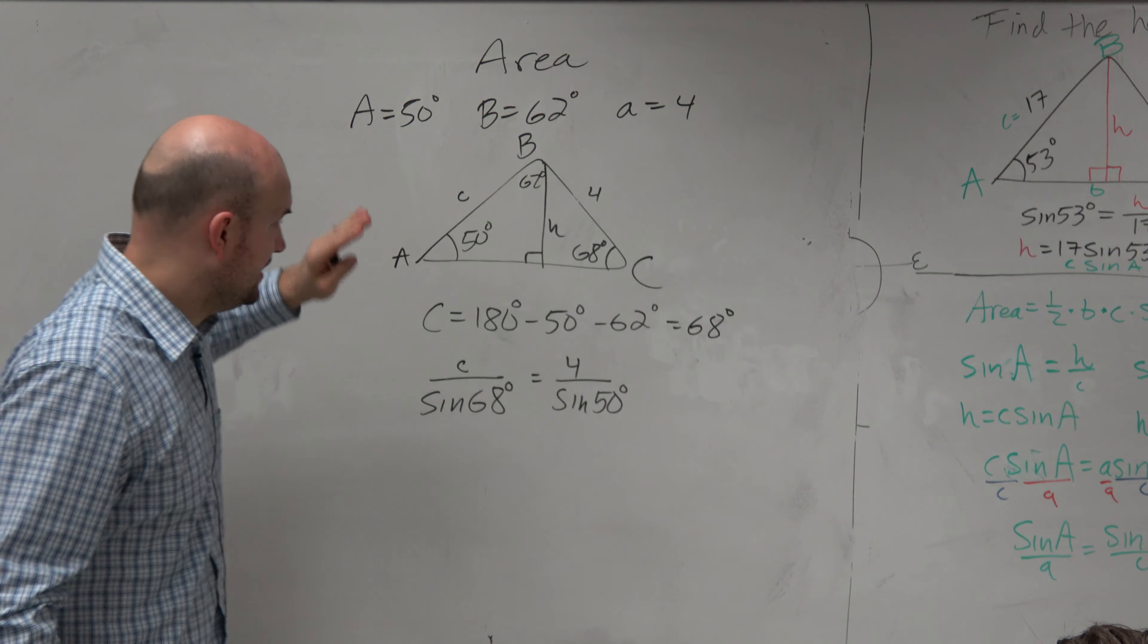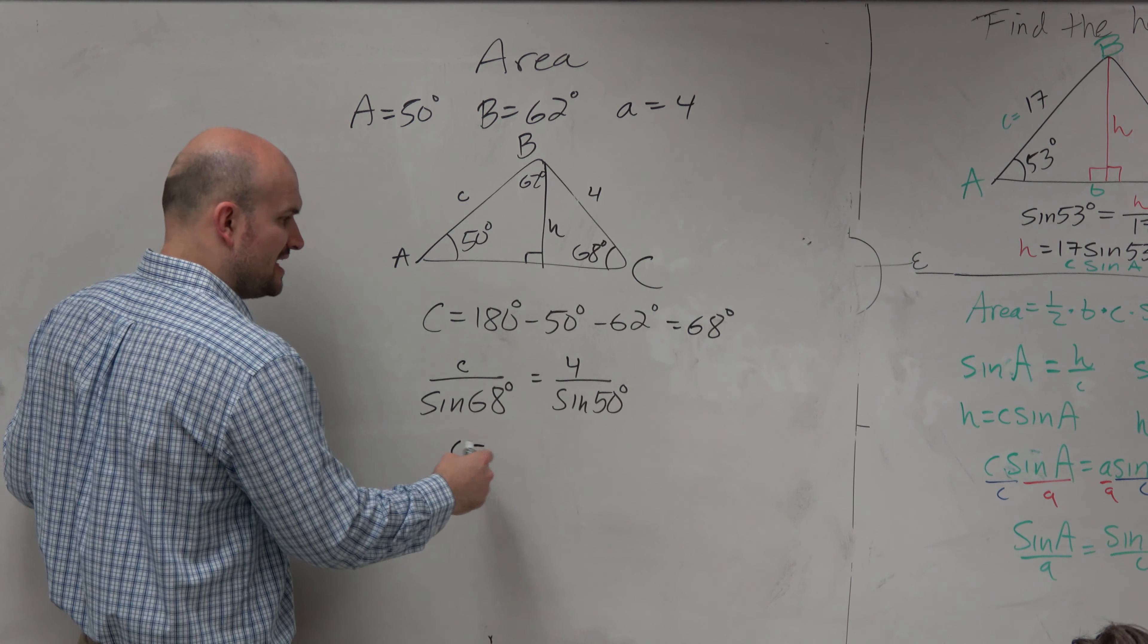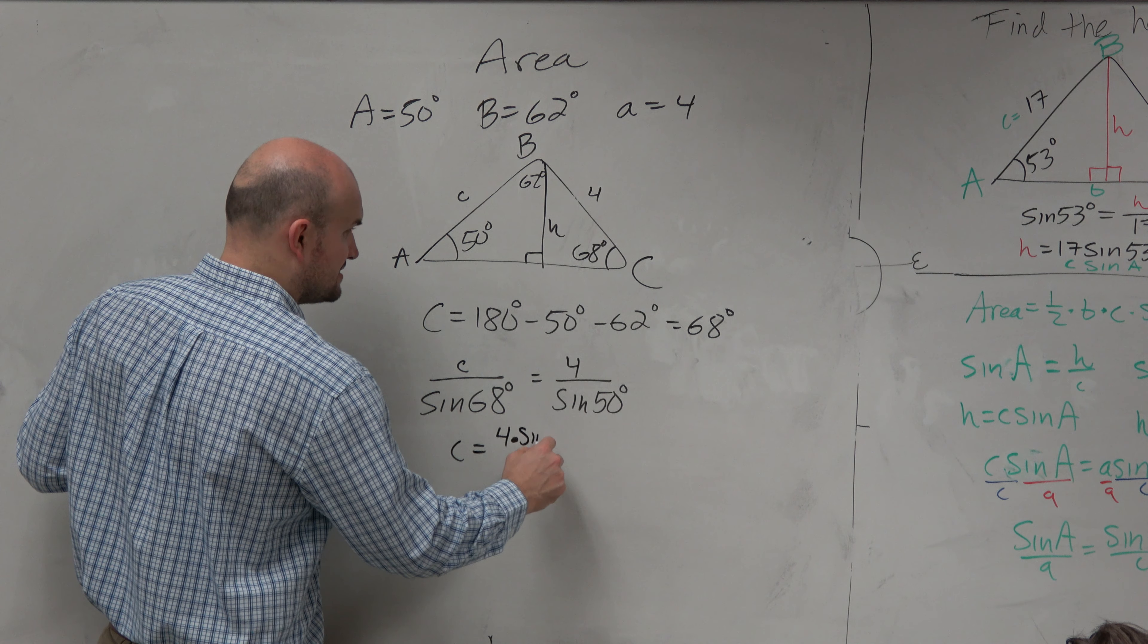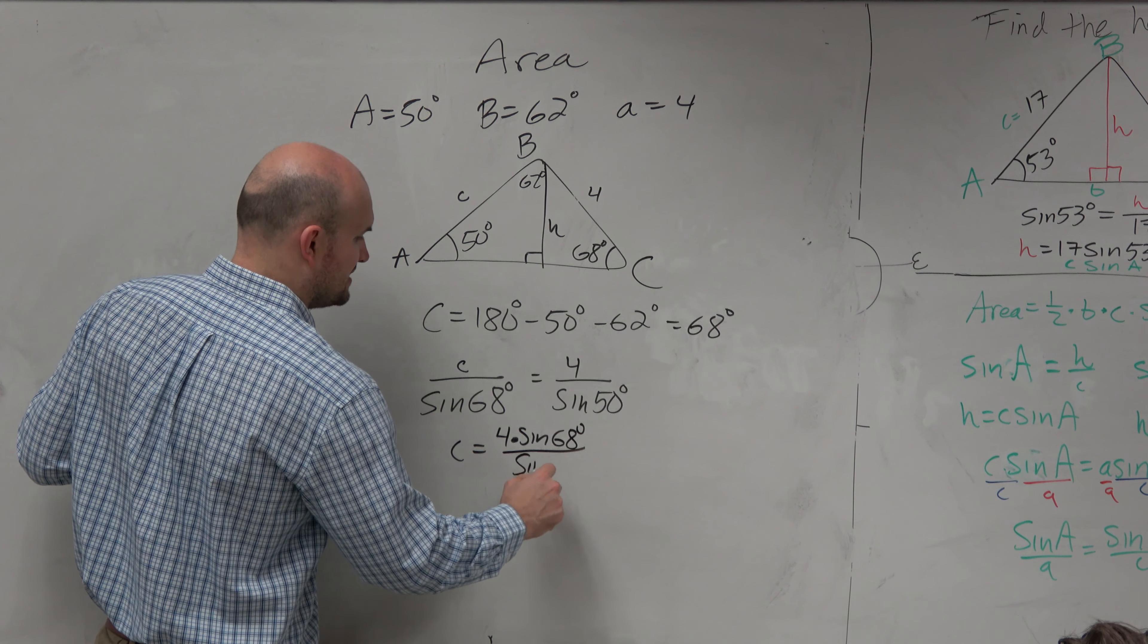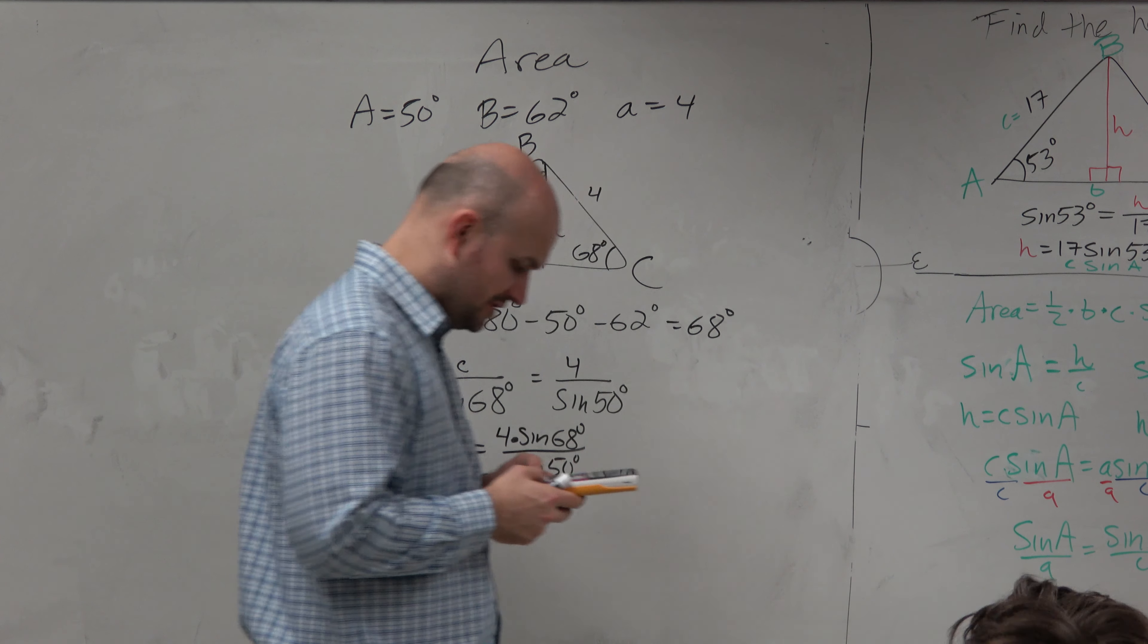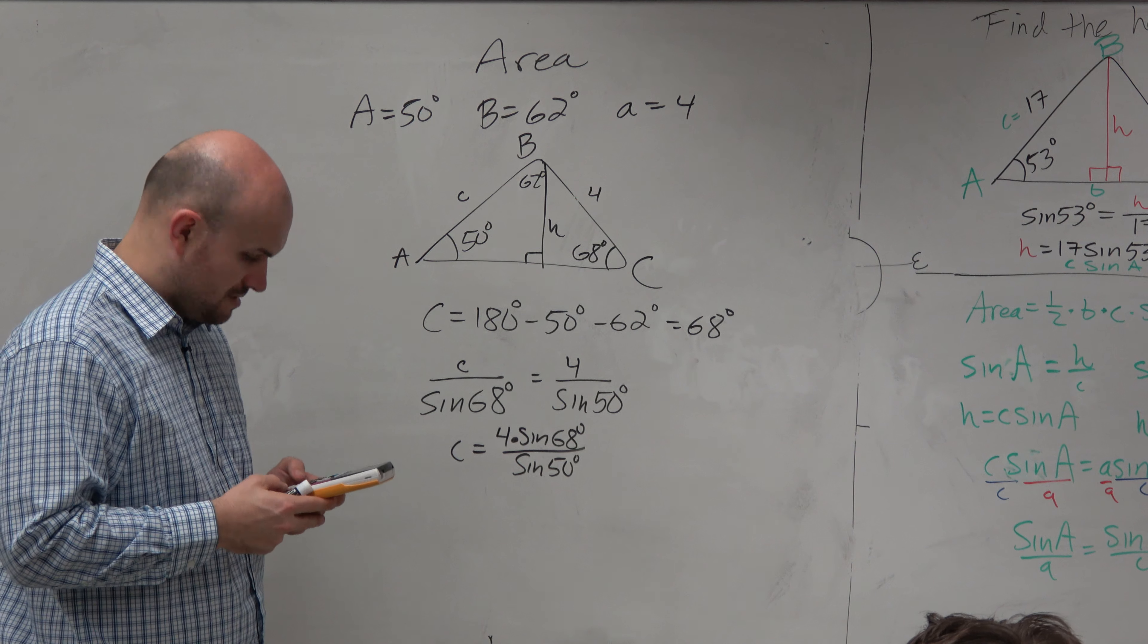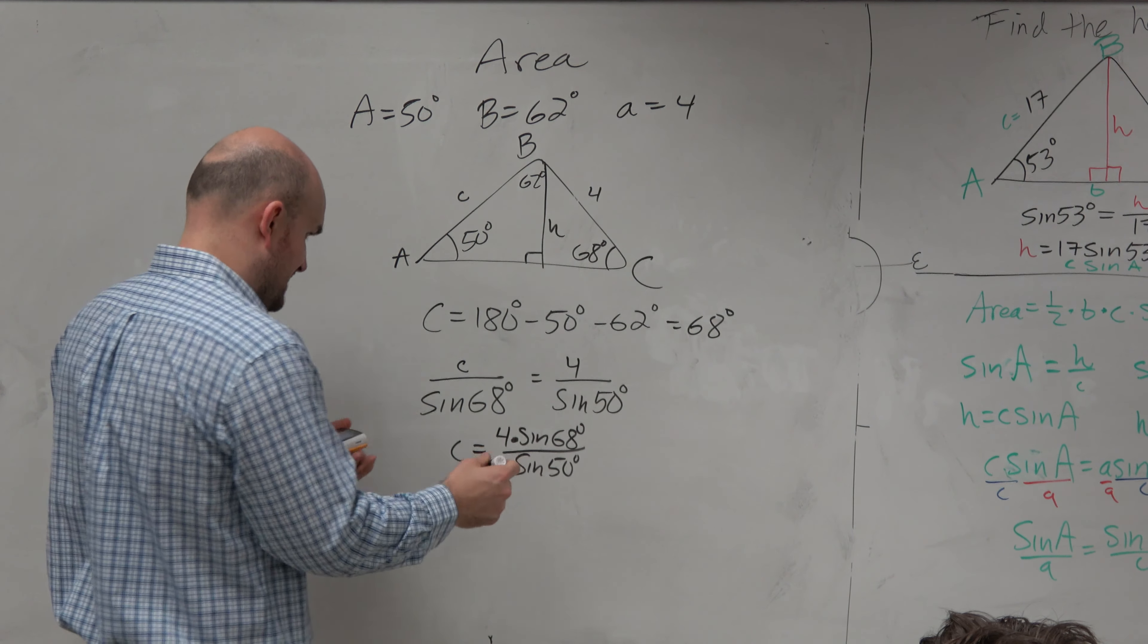However, some people, again, just a reminder, I'll show you the next step. C would be equal to, you've got to multiply by sine of 68. So what you type in your calculator would be 4 times the sine of 68 degrees divided by the sine of 50 degrees. Now, I will do this. And I'd prefer if you guys were doing this along with me, so therefore you can make sure that you're typing it in correctly as well.